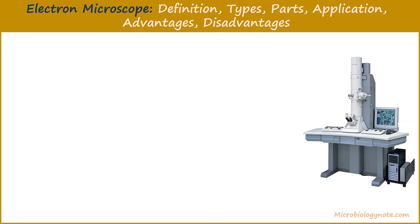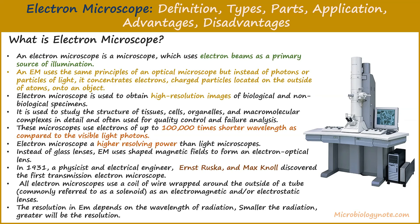First of all, we have to learn what is an electron microscope. In 1931, a physicist and electrical engineer, Ernst Ruska and Max Knoll discovered the first transmission electron microscope. An electron microscope is a microscope which uses electron beams as a primary source of illumination. This type of microscope uses the same principles of an optical microscope, but instead of photons or particles of light, it concentrates electrons — charged particles located on the outside of atoms — onto an object. These microscopes use electrons of up to 100,000 times shorter wavelength as compared to visible light photons.